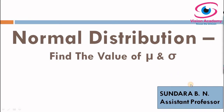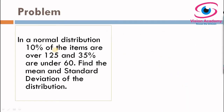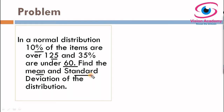Let us consider our problem. In this problem, we have two pieces of information. In a normal distribution, 10% of the items are over 125 and 35% are under 60. Using these two pieces of information, we have to find the mean and standard deviation of the distribution.